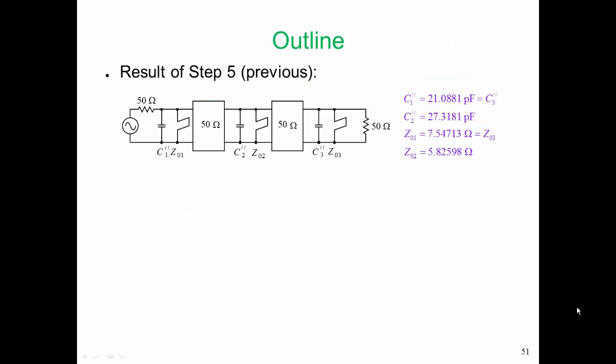From step five, we had this design. So we had two 50 ohm inverters separating three hybrid resonators. The characteristic impedance Z01 is 7.54 ohms, and that's equal to Z03.